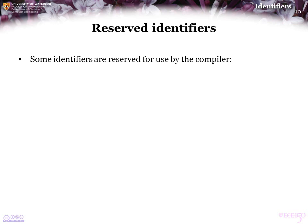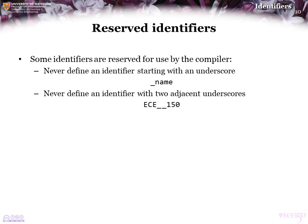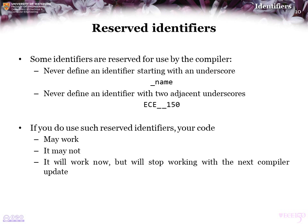Some identifiers are reserved for use by the compiler. Never define an identifier that starts with an underscore — do not use something like _name. And never define an identifier that has two adjacent underscores anywhere within it. There's no reason to do this, so just don't. Because the compiler uses these, your code may work since the compiler didn't happen to use your specific identifier — but it may not work if your identifier conflicts with one used by the compiler. Worst case: it works now, but when the compiler is updated and uses the same identifier, your code no longer compiles. Just avoid these reserved identifiers.